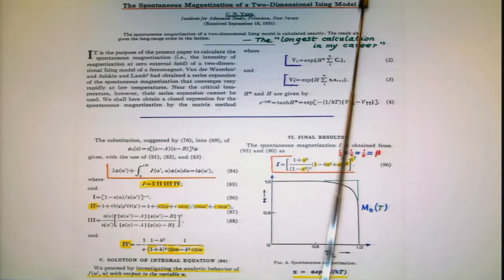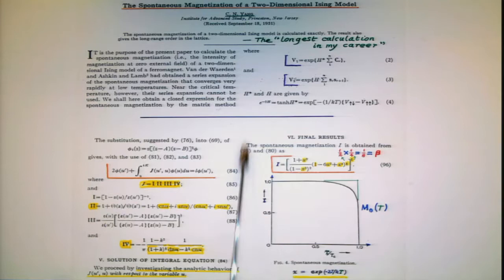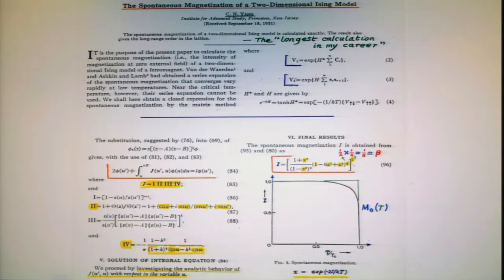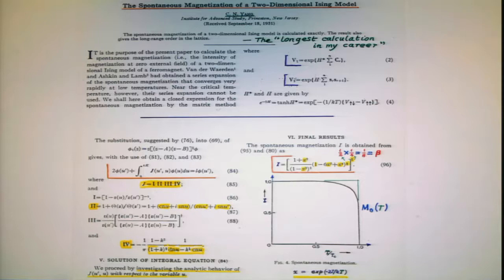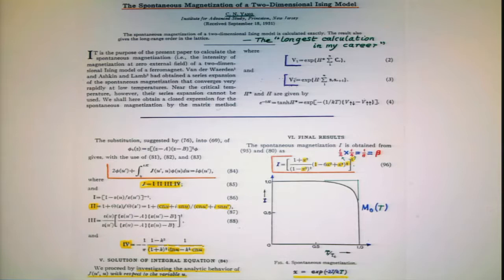And one of the interesting things is how he struggled to understand Onsager's logic, and that was not easy. But here then is the spontaneous magnetization — this is in 1952. And here is the comparatively simple answer. But the answer was a product of four very complicated integrals. And then miraculously, at the last step, almost, these complications cancelled out, and one was left with this power here. And the crucial fact was that beta was one-eighth.